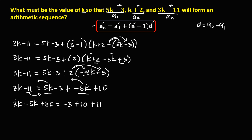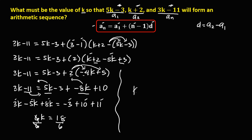Simplifying: 3 minus 5 is negative 2, and negative 2 plus 8 is positive 6, so we have 6k. On the right side, negative 3 plus 10 is positive 7, and 7 plus 11 is positive 18. Dividing both sides by 6, therefore k is equal to positive 3.